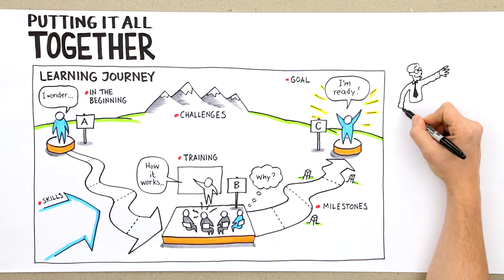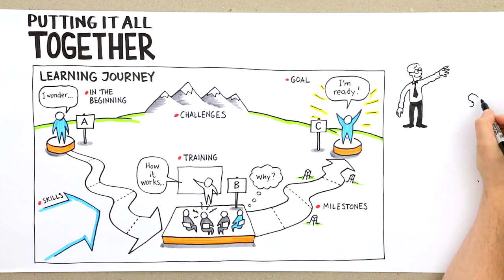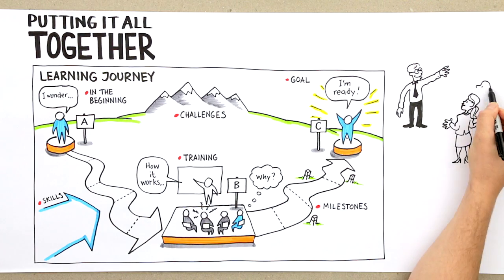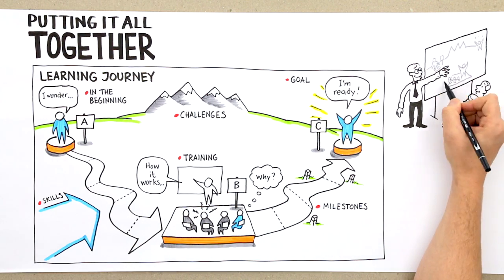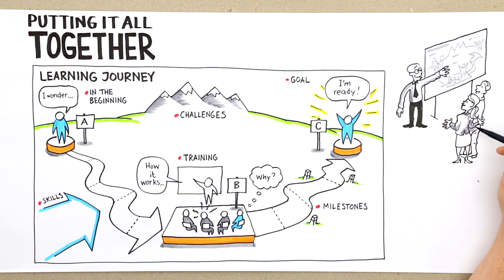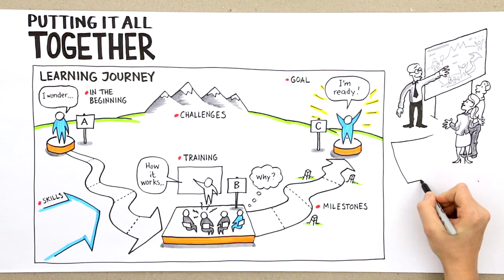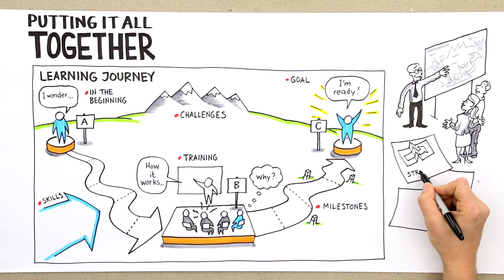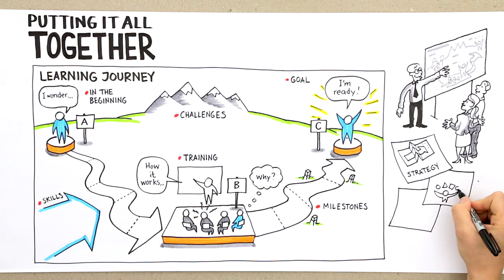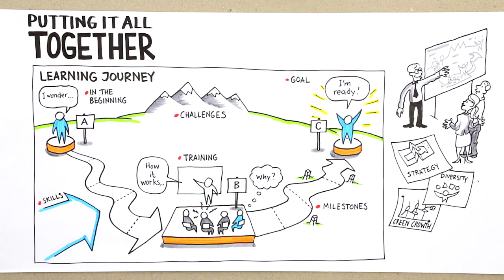Now you just need to add the eighth element: your own visual language. Visuals specific to your area of work. What do you need to be able to draw in a simple way? Strategy, diversity, green growth? Watch the video on the eighth element.